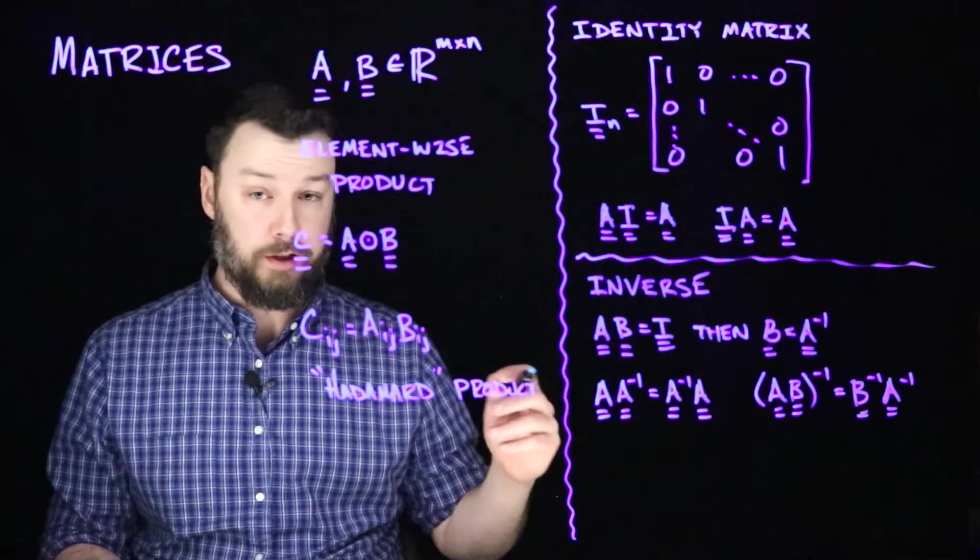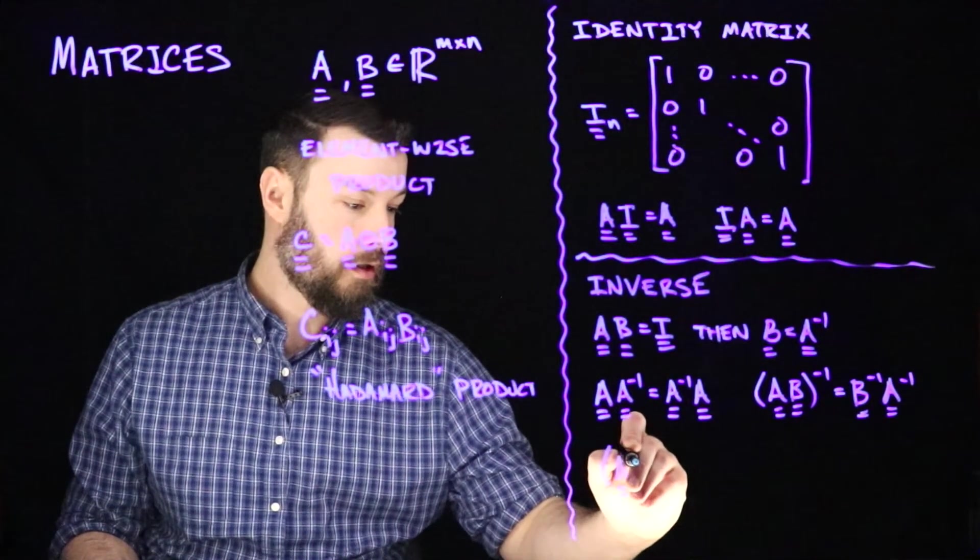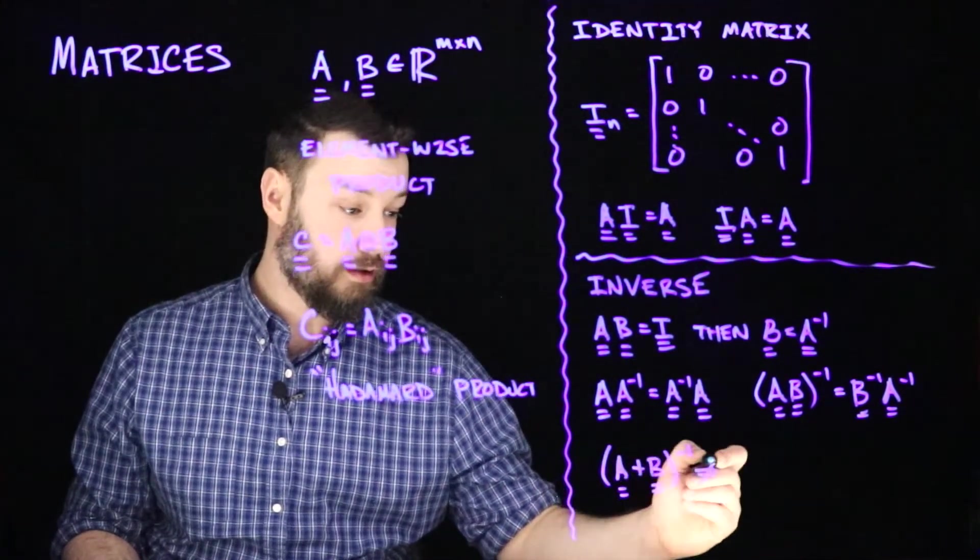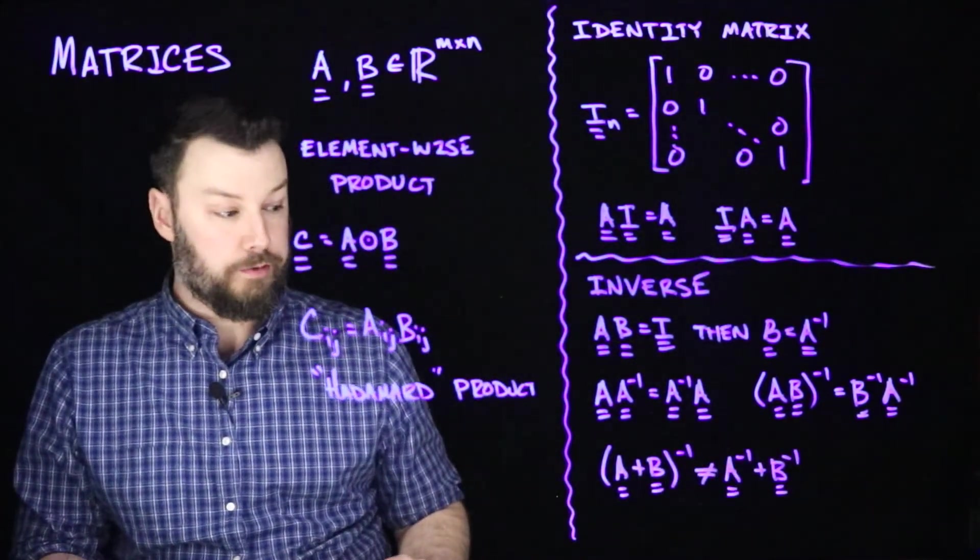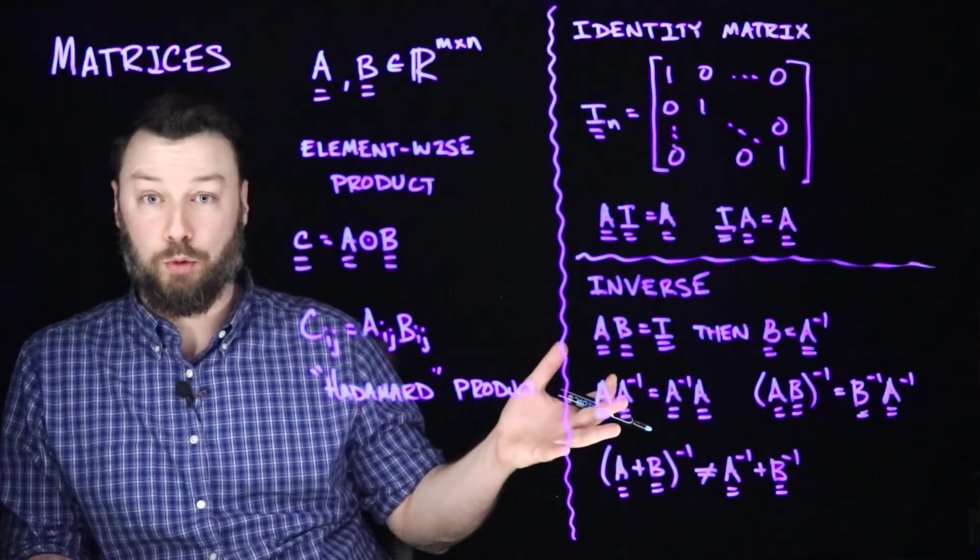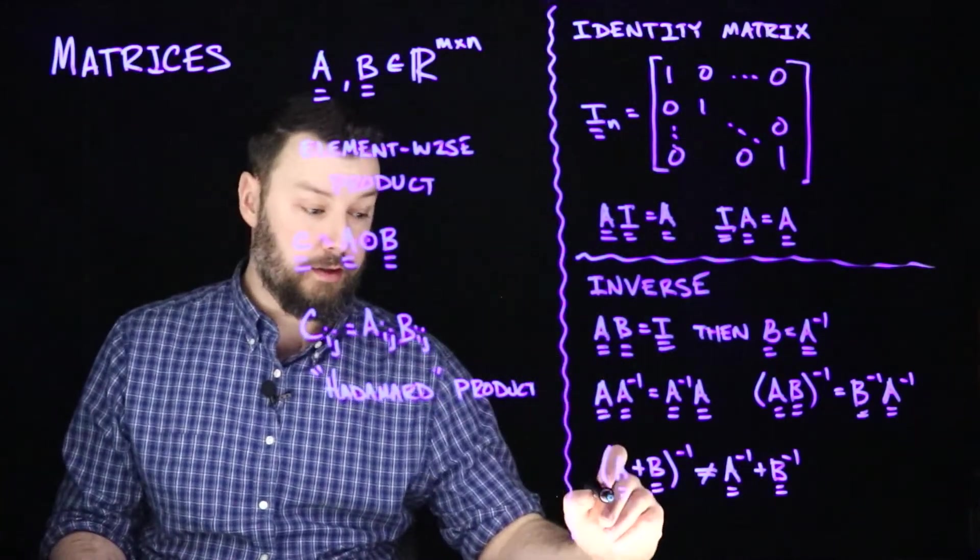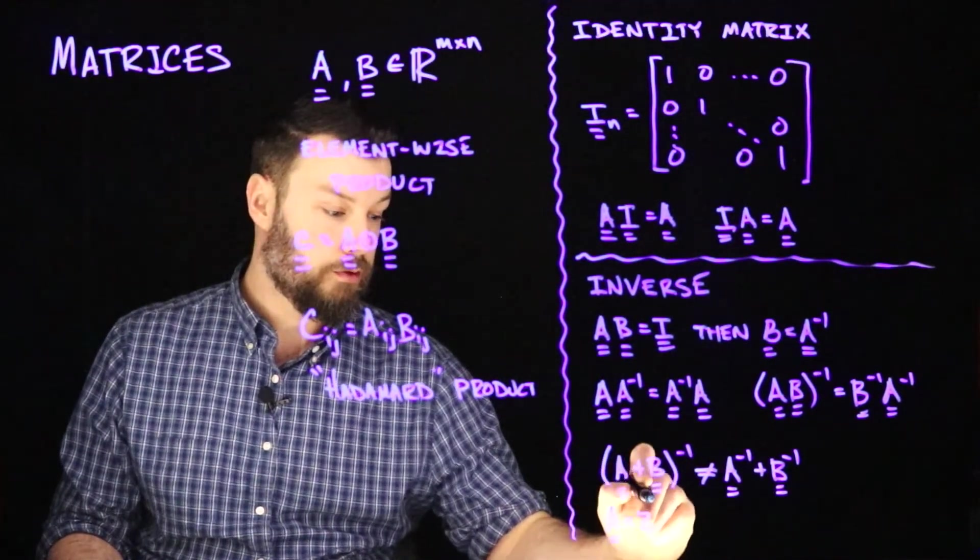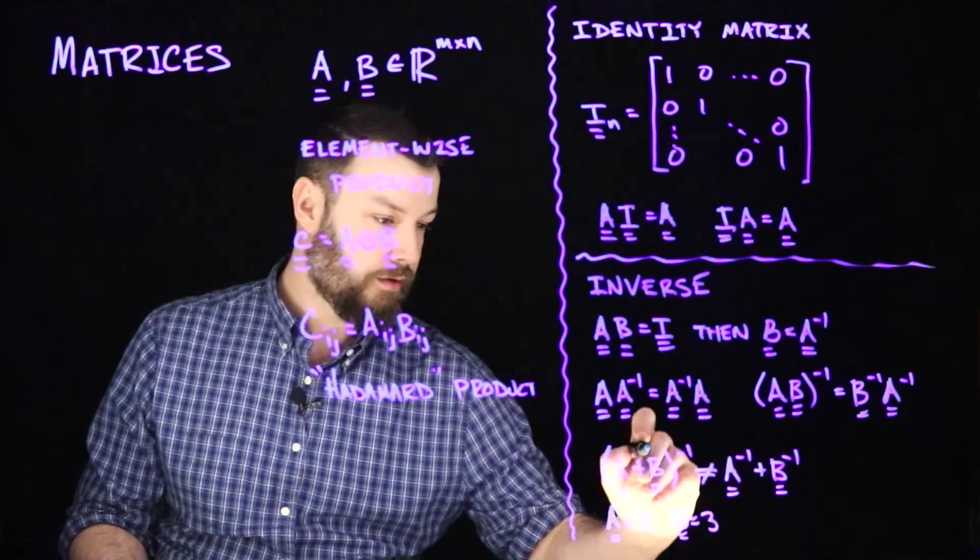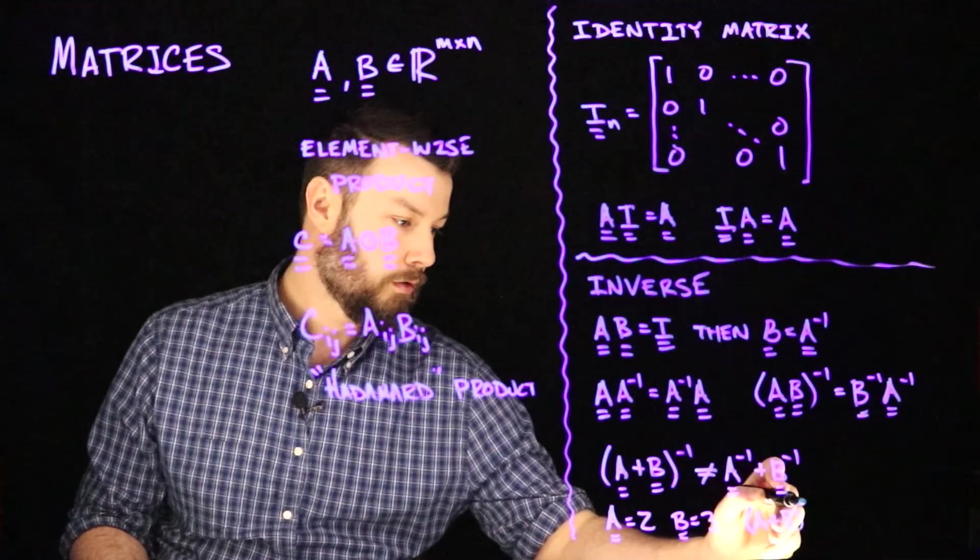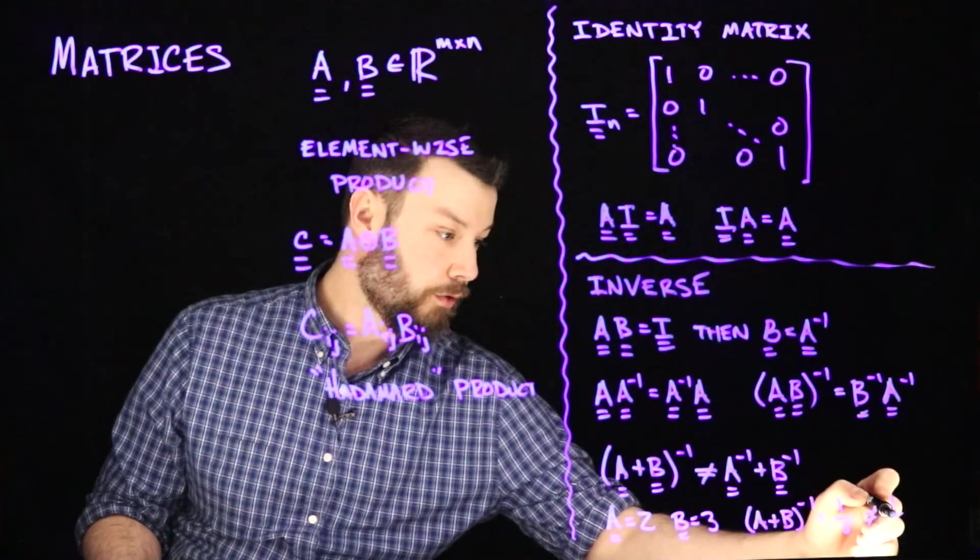And in particular, a thing to note is that the inverse of a sum is not the sum of the inverses in general. That is to say that if I have A plus B inverse, this is not going to be equal to A inverse plus B inverse. And you can convince yourself why this must be true by just imagining that these A and B were one by one matrices, that is scalars, and so then clearly that wouldn't work in general for scalars. If you imagine that A was 2 and B was 3, then A plus B inverse is 1 over 5, but that is not equal to 1 over 2 plus 1 over 3.